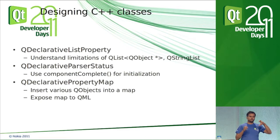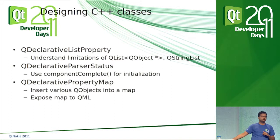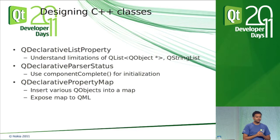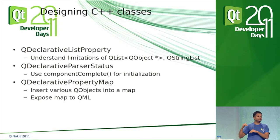Now that you have lots of properties in C++, you'll instantiate this type in QML and assign maybe 10 or 15 properties. Every time a property gets assigned, your C++ code gets called. So on startup you might be doing 10 things redundantly. The way to avoid this is to inherit from QDeclarativeParserStatus — a C++ interface that gives you a virtual method called componentComplete(). In componentComplete(), you do your one-time initialization. At that point, all the QML properties have been assigned in C++.